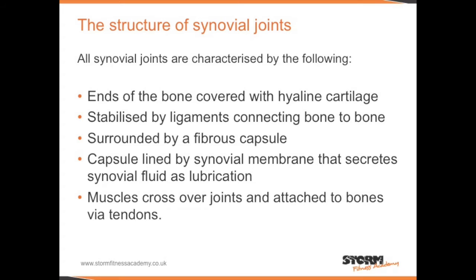Synovial joints are also stabilised by ligaments that connect bone to bone. They are surrounded by a fibrous capsule, and the capsule is lined by a synovial membrane that secretes synovial fluid as lubrication. Finally, muscles cross over the joints and are attached to bones via tendons.